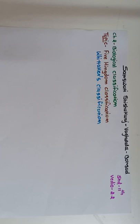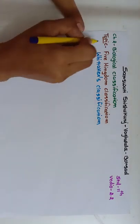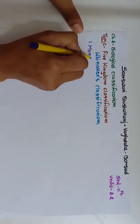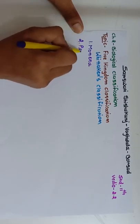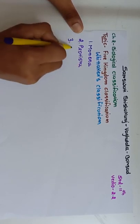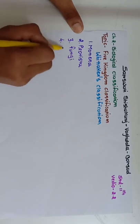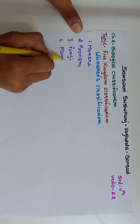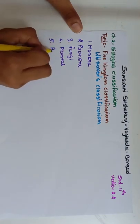The classification given by Whittaker is five kingdom classification. These five kingdoms are: first kingdom is Monera, second kingdom is Protista, third kingdom is Fungi, fourth kingdom is Plantae, and fifth kingdom is Animalia.